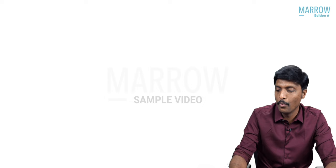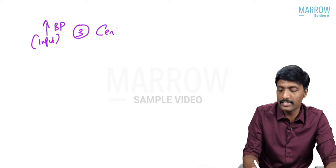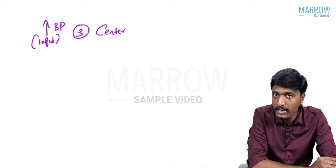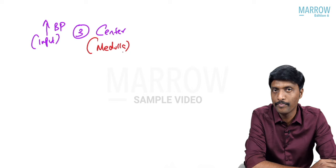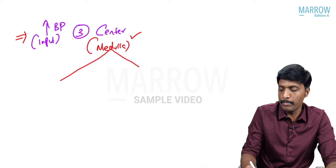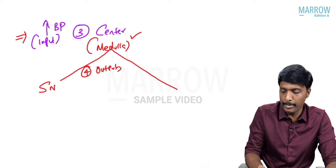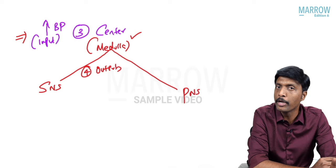Two boxes opened: receptor and sensory input. Now, this increase in blood pressure — the input — comes to the third component, which is our center. The center for this baroreflex lies in the medulla. The input is increase in blood pressure. The fourth component is output: we have sympathetic output and parasympathetic output. Because of these outputs, we will have a final response.